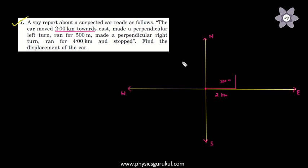Next made a perpendicular right turn. So if we move north in this direction, this is left and this is right. So now we move 4 km right, this is 4 km and stopped. So the car has stopped.